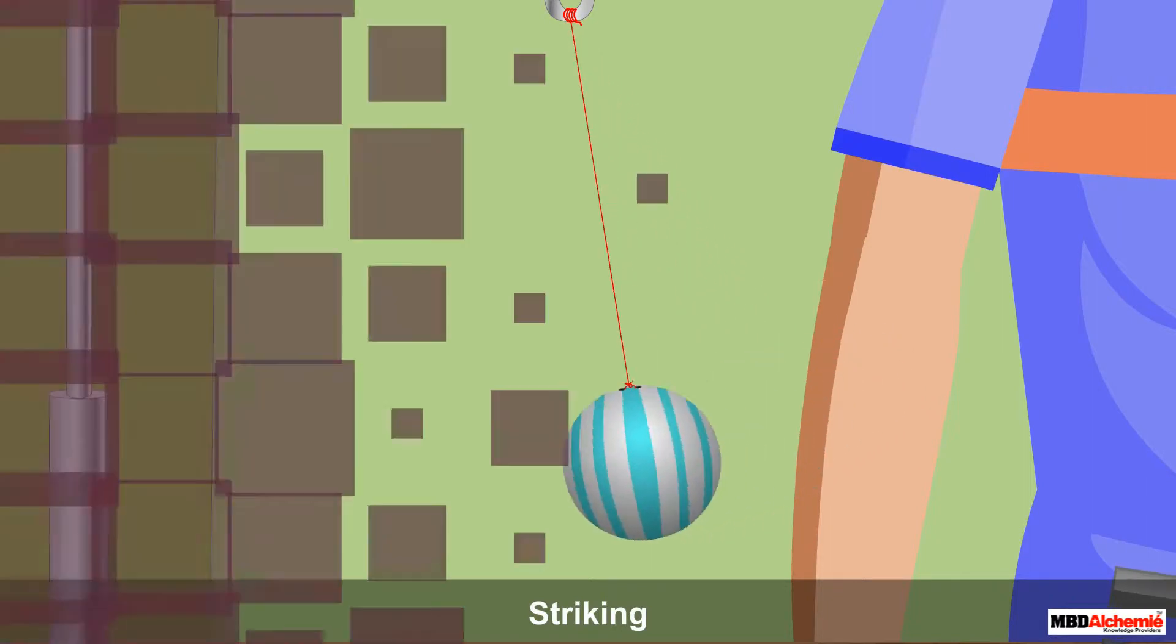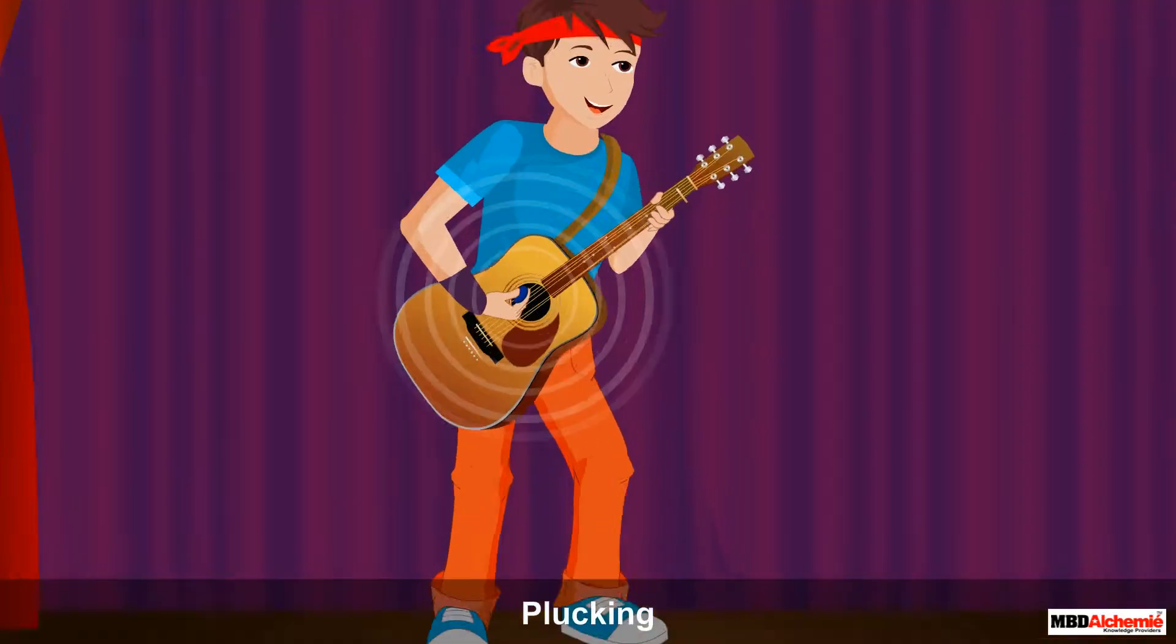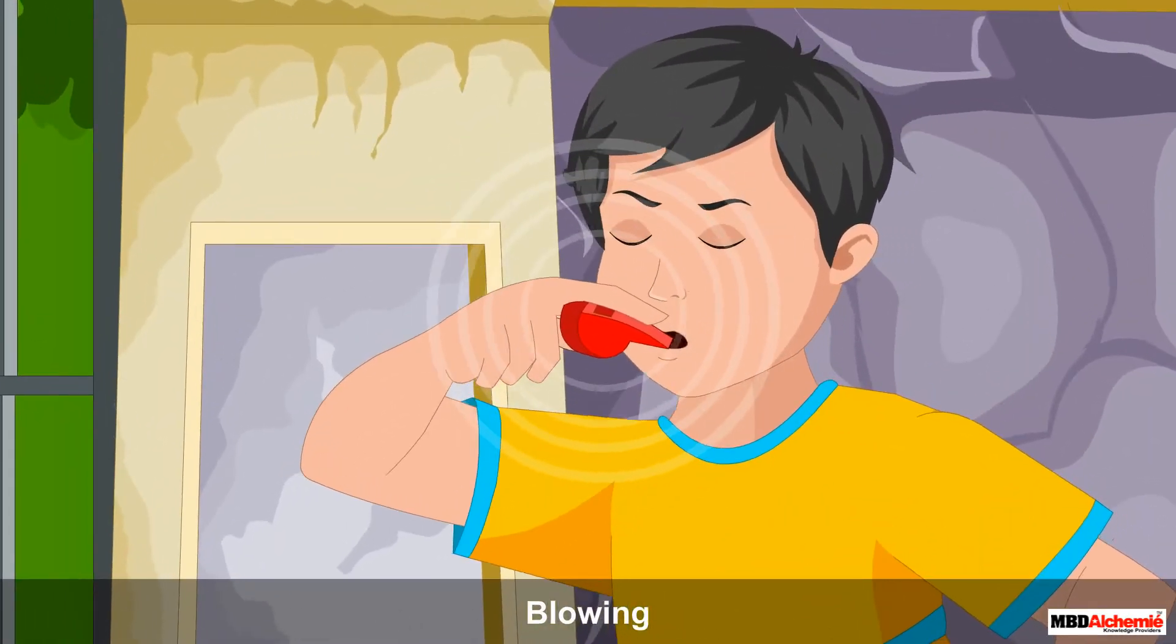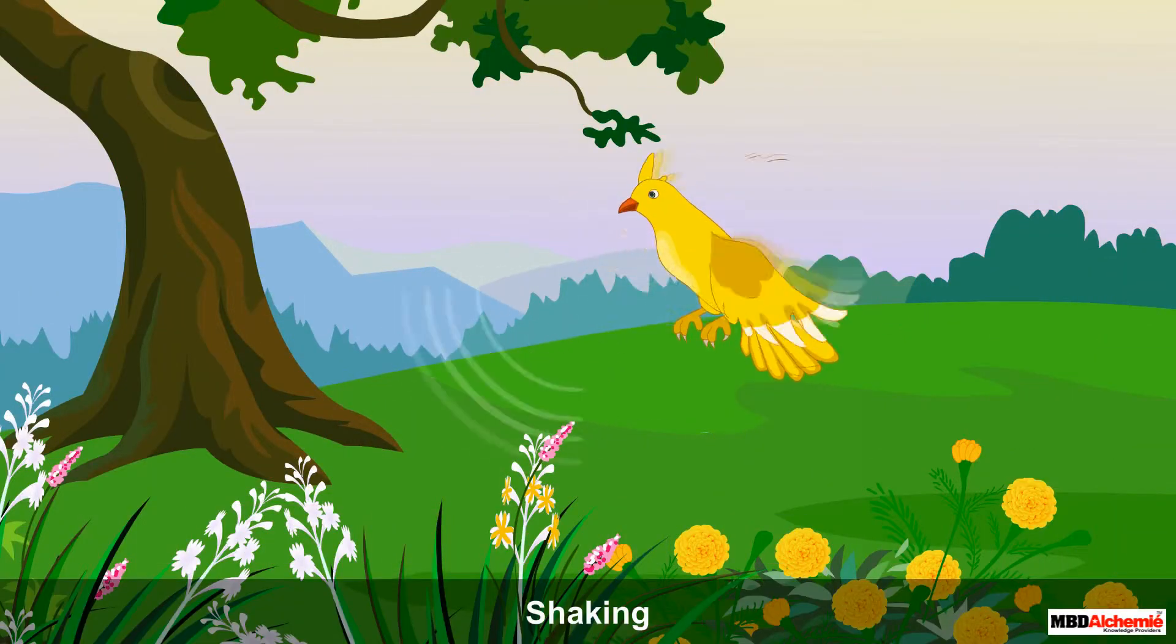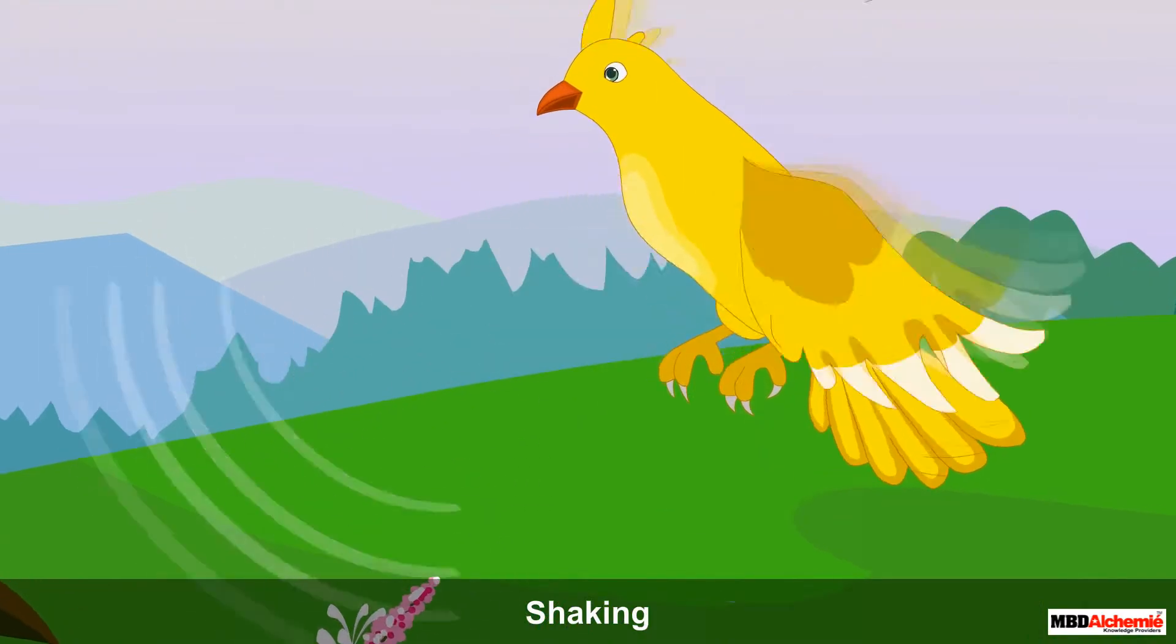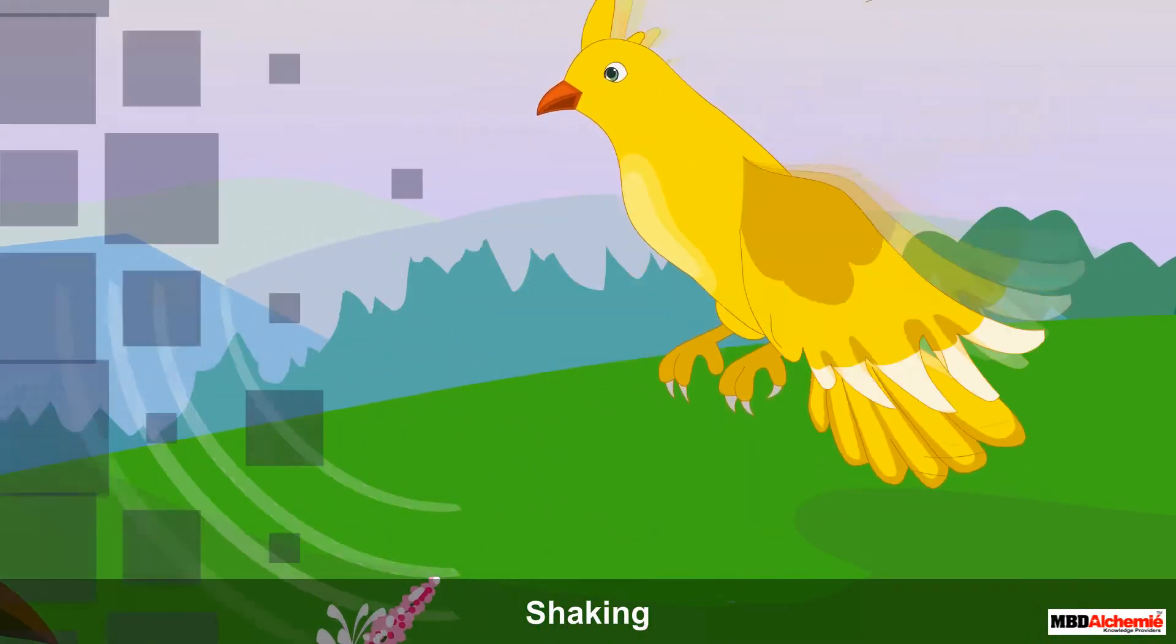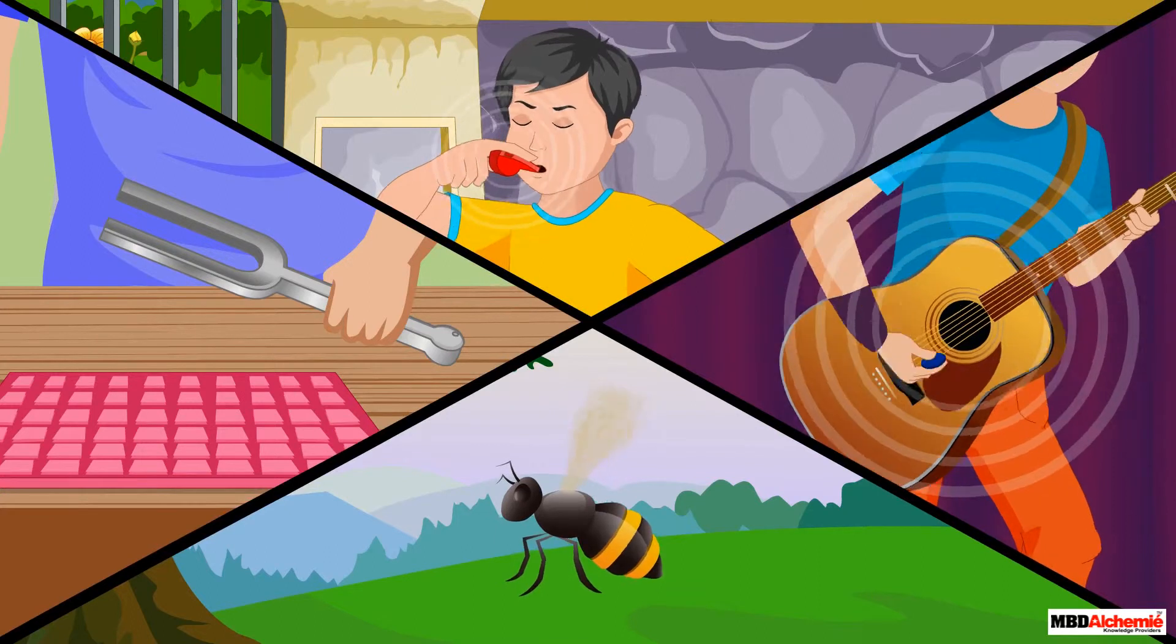we can also produce sound by plucking, as in the case of a guitar, blowing as in the case of a whistle, and shaking as in the case of a bird flapping its wings. In all these examples, we are